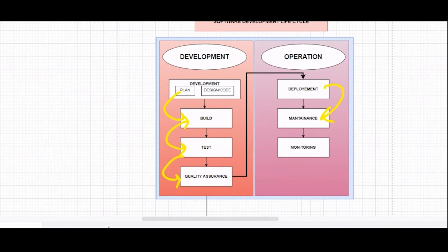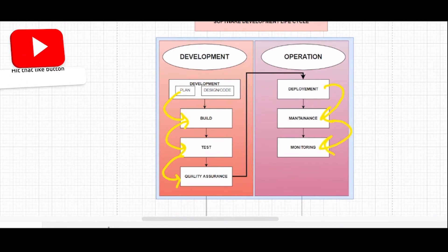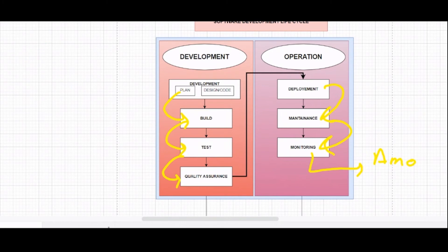After deployment, we move to the maintenance and monitoring phase. Maintenance involves checking whether things like the login page, registration page, and payment method are working properly. For monitoring, we use tools like Amazon CloudWatch, Datadog, and Prometheus — which was developed by the Cloud Native Computing Foundation community.